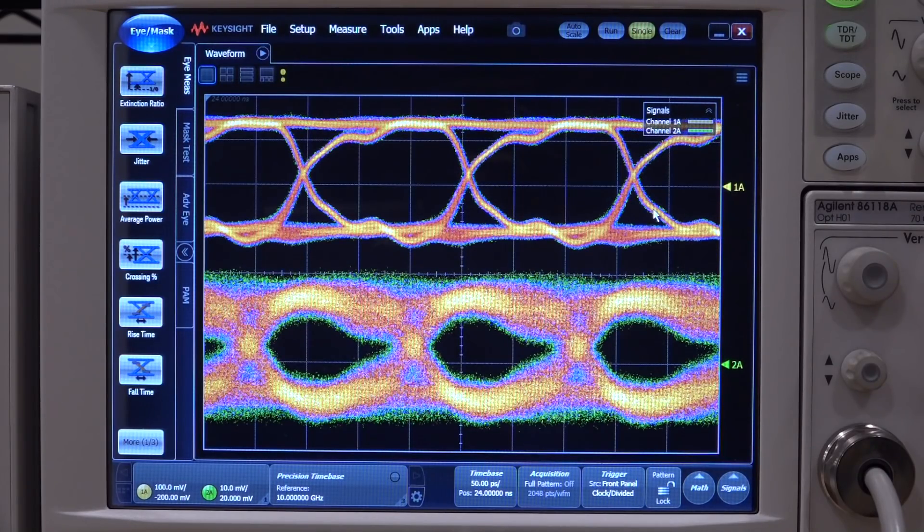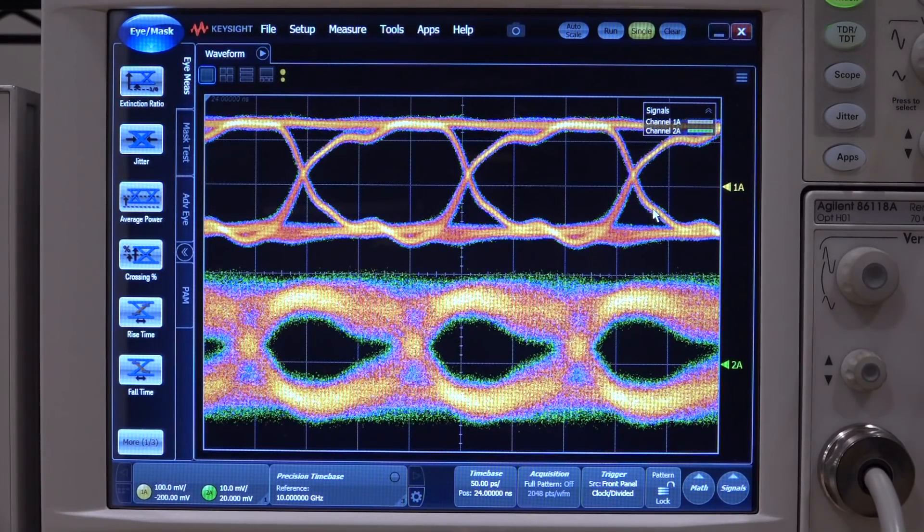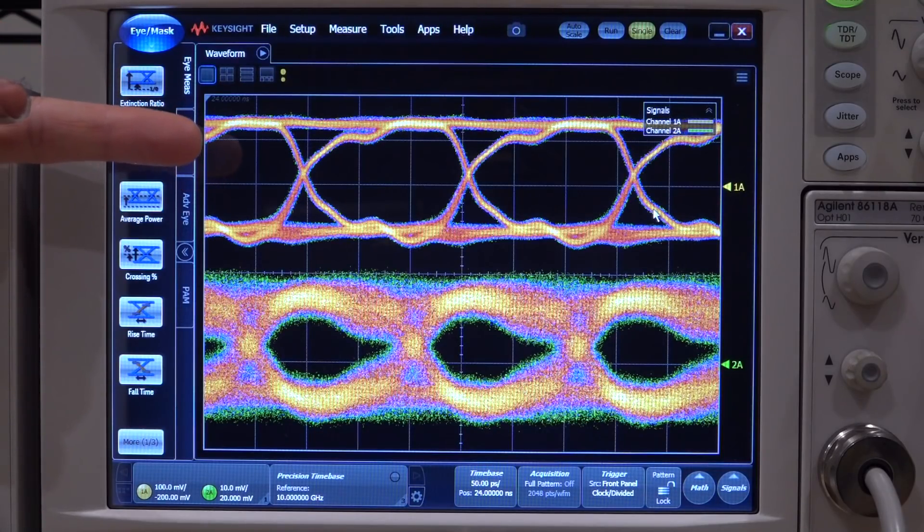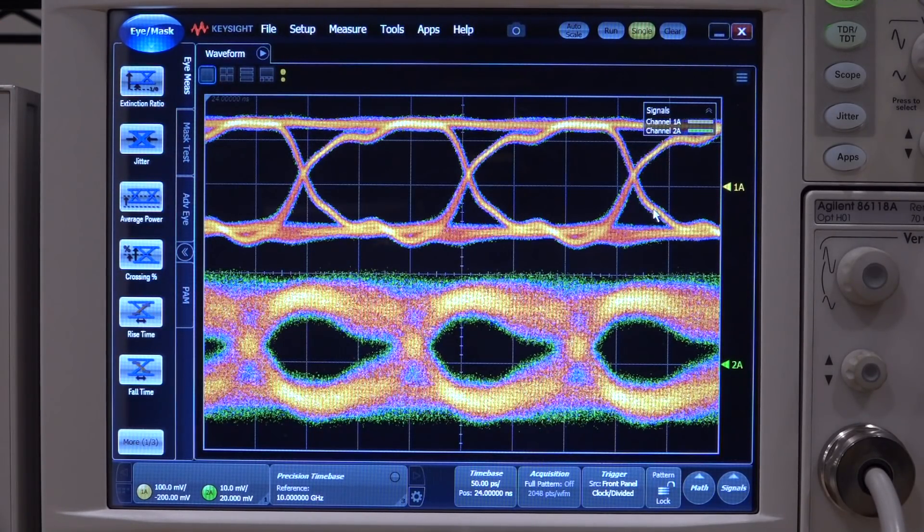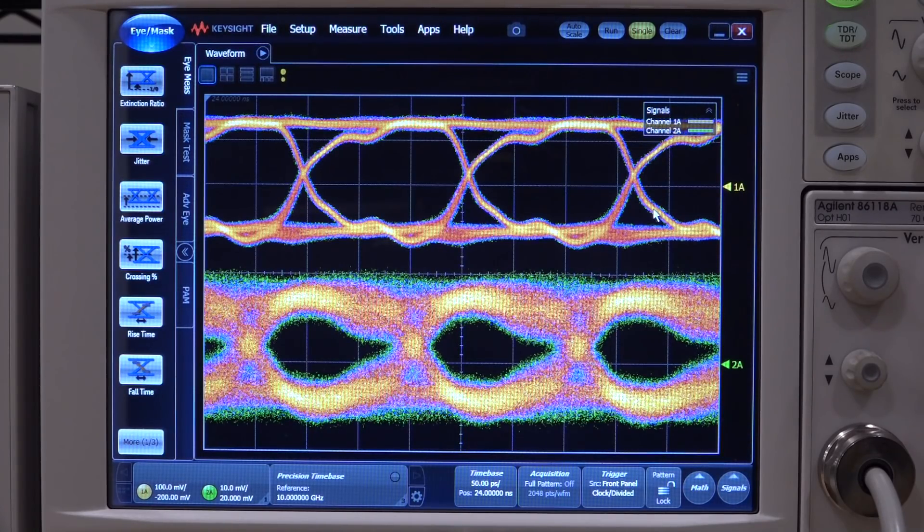And here is the eye diagram at 6.125 gigabit per second, where the top plot is the through and the one captured through the probe. I have to say it's pretty good. I can definitely use this in my future setup.